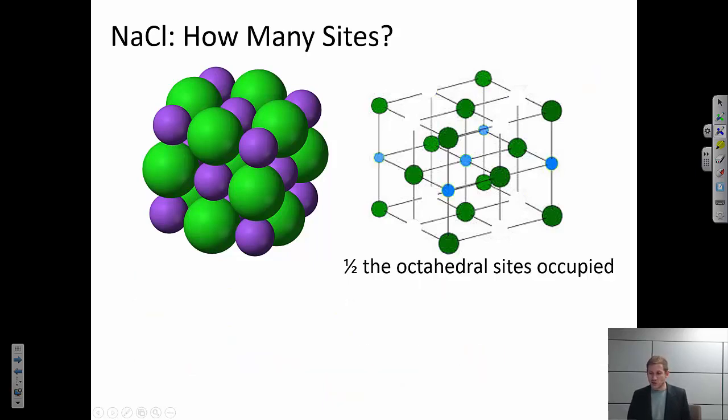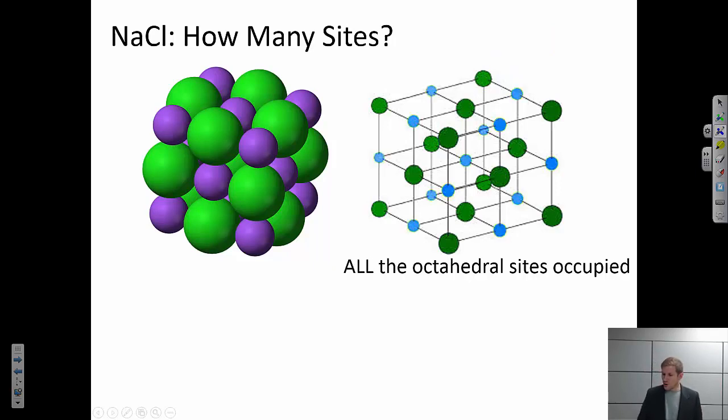But the next question is, how many of those sites is it going to occupy? So for example, we could occupy half of the sites. Remember, in an FCC lattice, we have four octahedral sites. So this is one full site because it's entirely within it. This one is one quarter of a site because only a quarter of that sphere is within the unit cell. But if I look at all of these four together, that adds up to one. So these are two available sites, that's half of the sites. So that's one potential configuration. Or we could think about maybe it's occupying all the sites. So how do we figure this out?